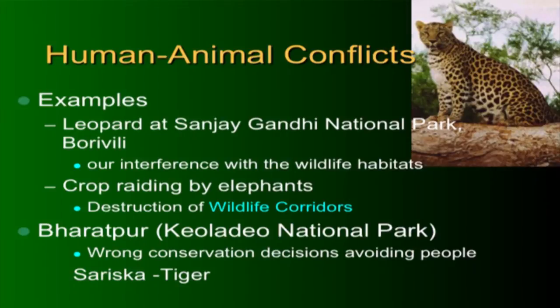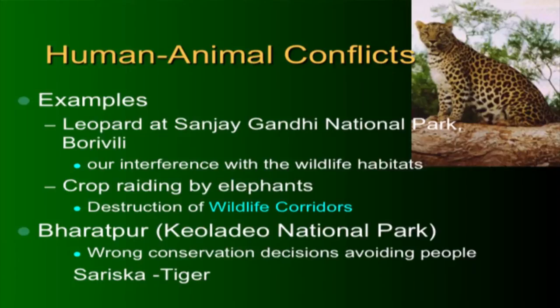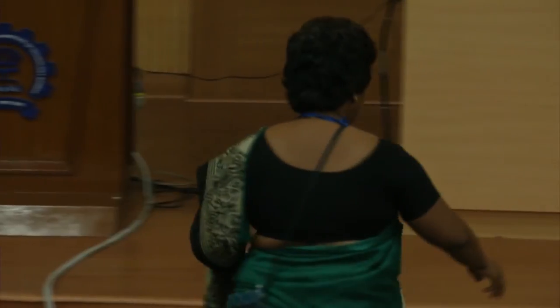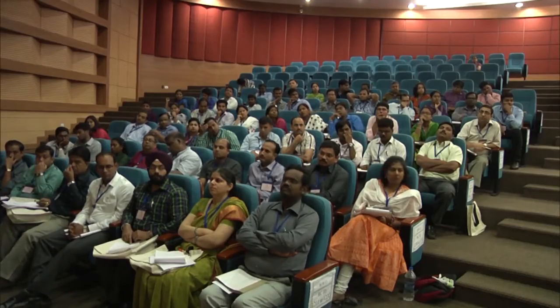Man-animal conflict is widespread. In Bharatpur, an artificial man-made wetland attracts migratory birds in winter, but when water levels dropped, instead of working with the community, forest officers banned community access. This led to riots and violence. Similarly, in Sariska, it was believed that isolating people from the reserve would protect tigers, but all tigers eventually disappeared from the area.